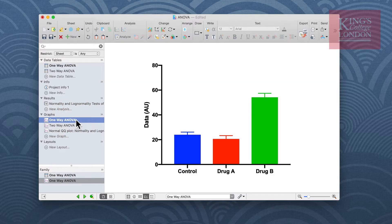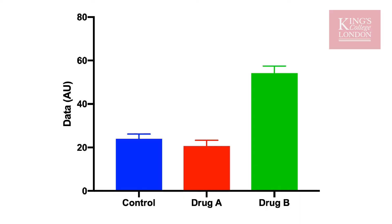Here we can see a graphical presentation of our experiment: control in blue, drug A in red, and drug B in green. You can immediately see that control and drug A look quite similar, whereas drug B numerically appears to have a higher output. We wish to undertake a one-way ANOVA to compare these three groups.